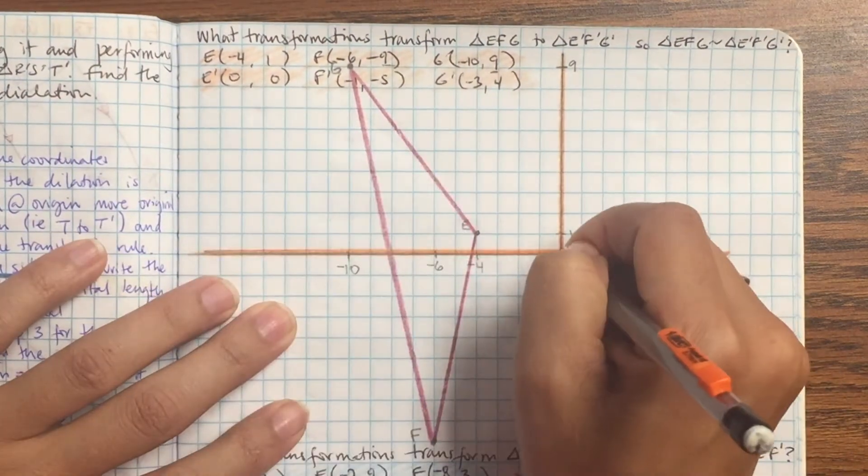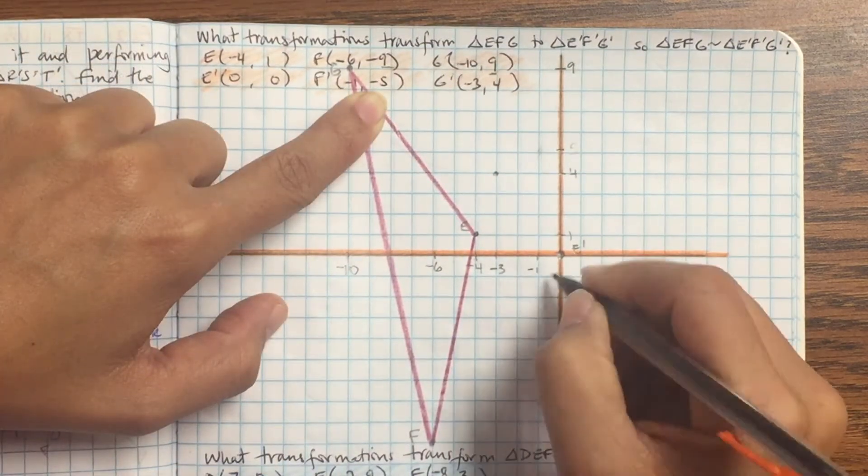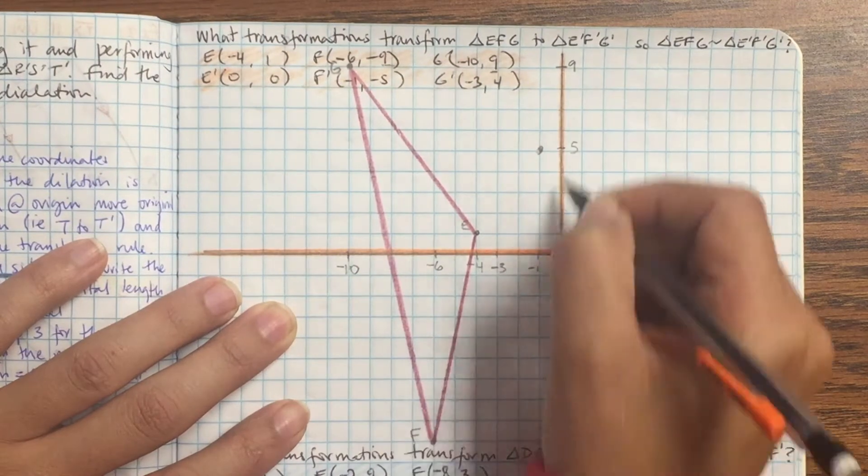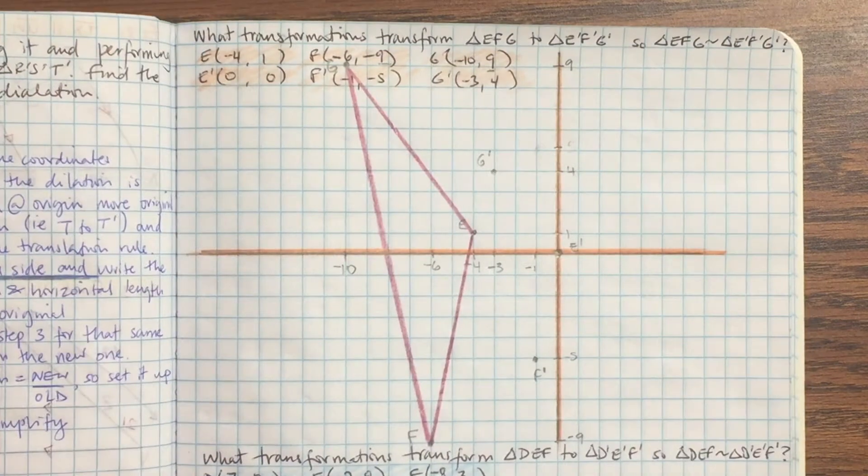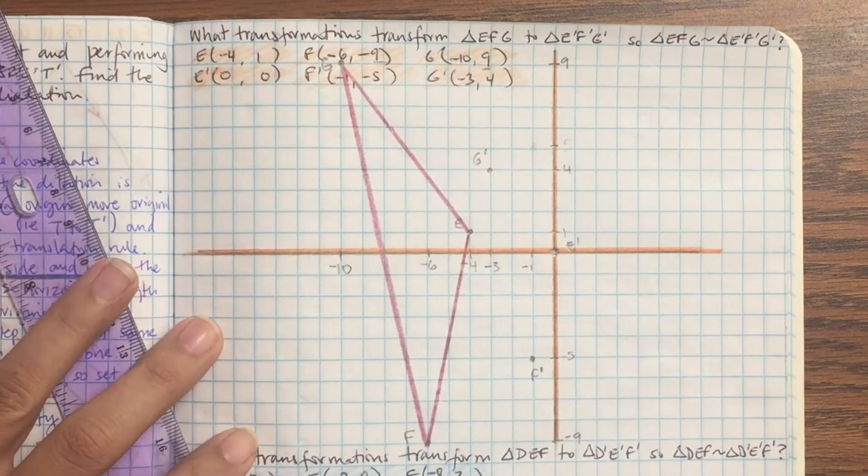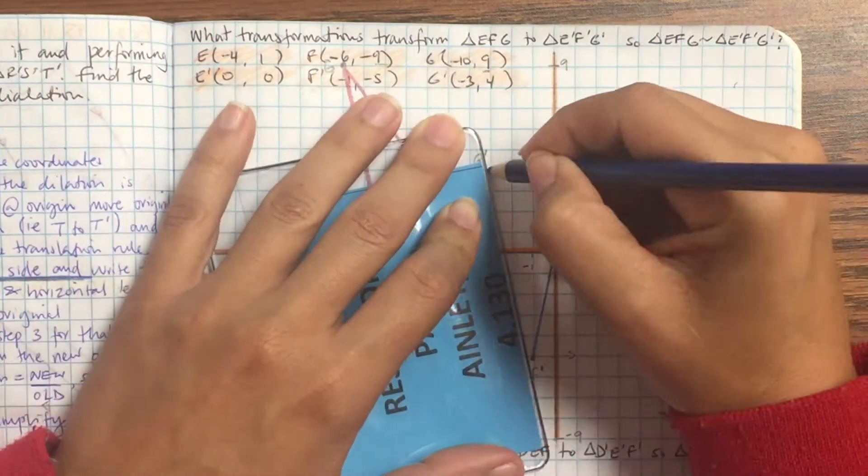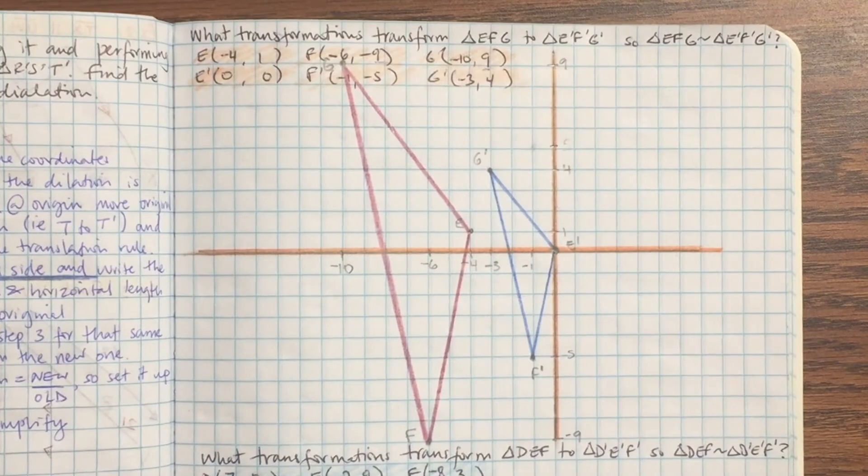Alright, so let's draw the transformed one, which is going to be 0, 0, that's the origin. Negative 1 negative 5, left 1 down 5. Negative 3, 4, left 3 up 4. And then go ahead and connect the dots. Alright, so what happened? We can see it got smaller, so I already know my scale factor is going to be a fraction.